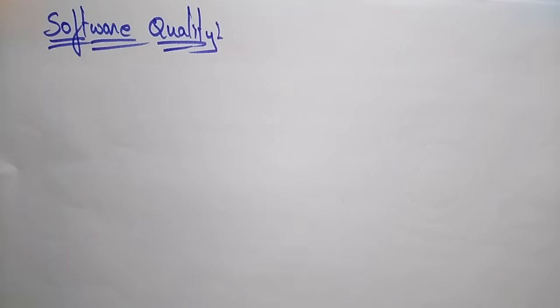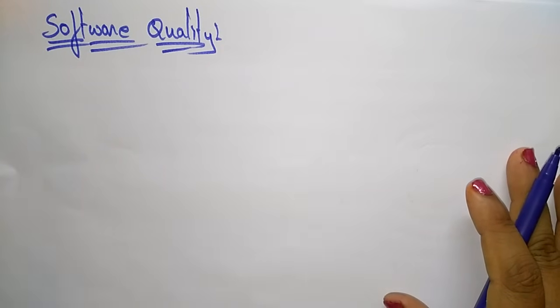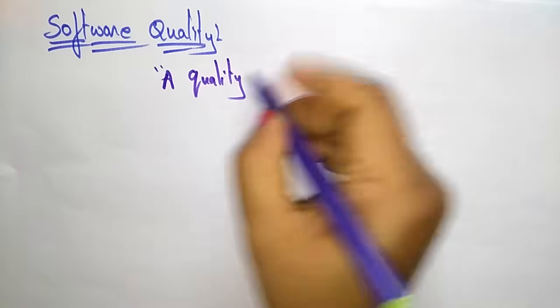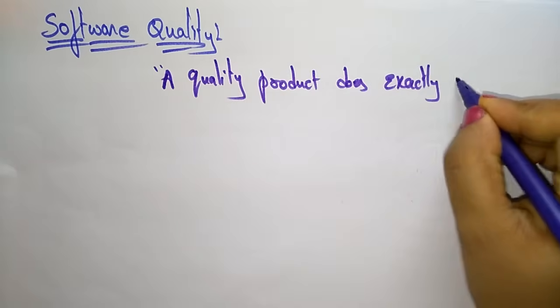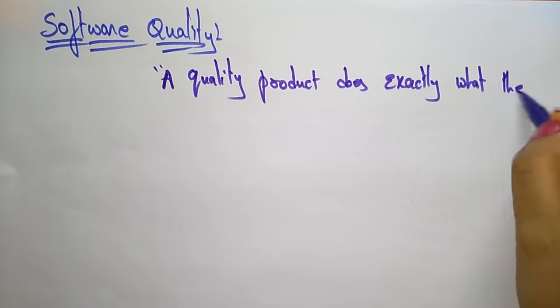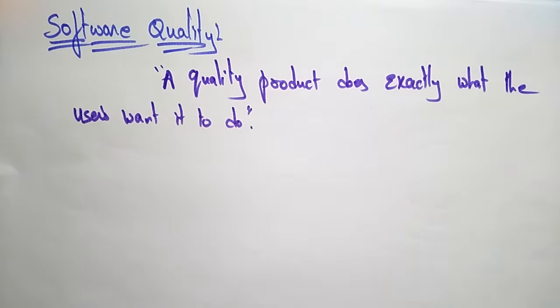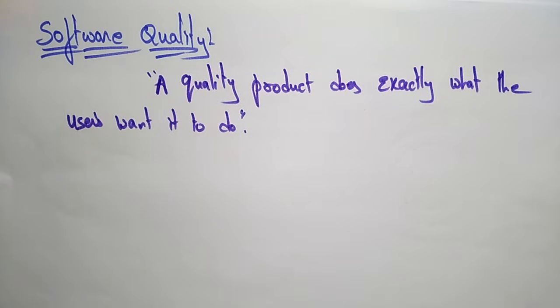Hi students, coming to the next topic in the subject software engineering — software quality. So let us see the overview of software quality. What is software quality actually? Quality means if the user gets the exact output whatever he requires, that indicates software quality. A quality product does exactly what the user wants it to do. If the user is satisfied with that, then you can say that the software is a quality product.